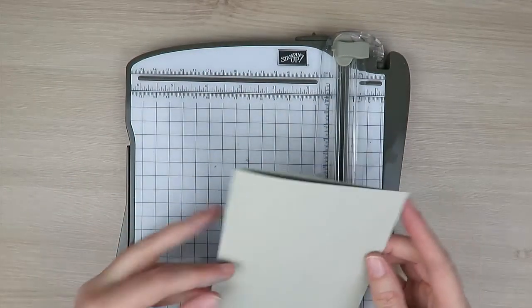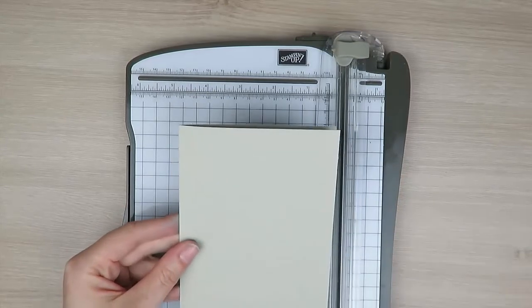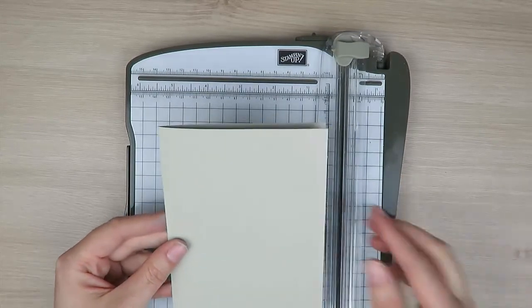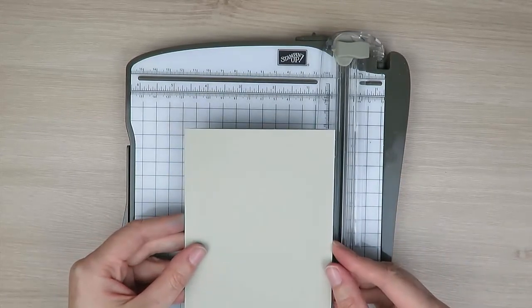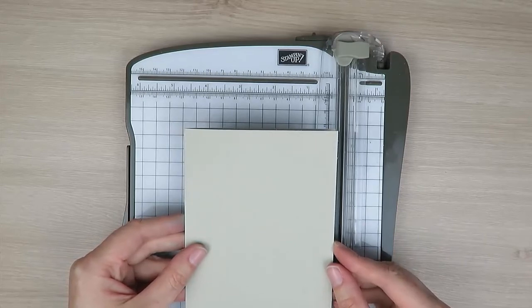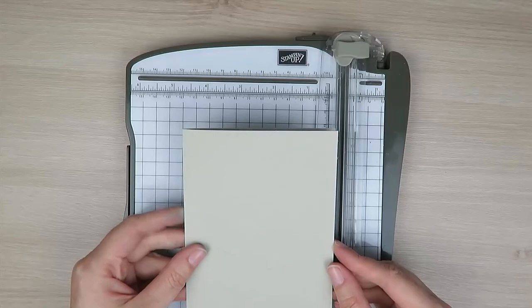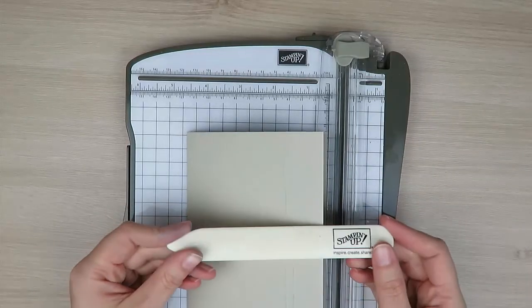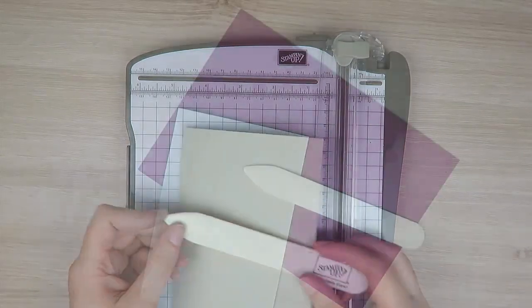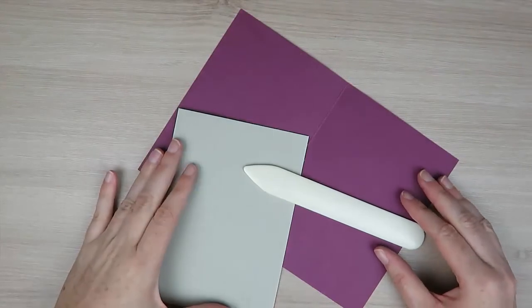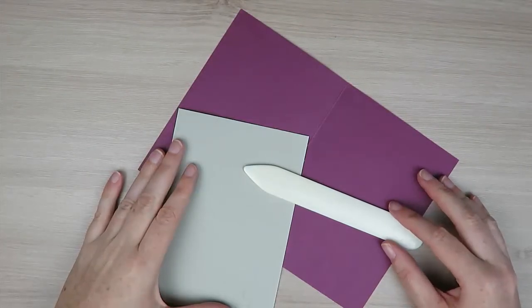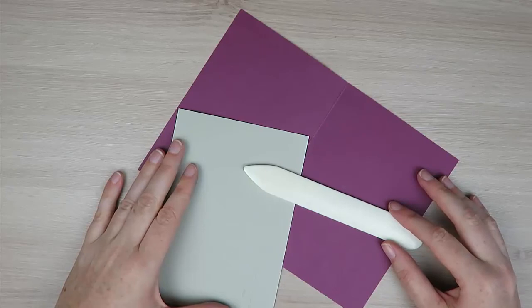So there are some other options for using your bone folder. You can start with your ruler, but you can also use it with your Stampin' Trimmer to create some decorative accents for your cards and paper crafting projects, and also with your Simply Score tool if you happen to misplace the stylus that comes with your tool. So there you have it, a video on how to utilize your bone folder to create score lines on your cards and paper crafting projects.